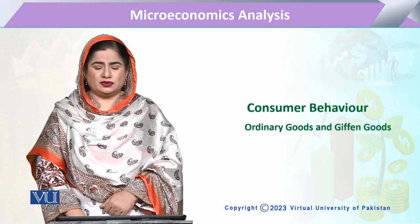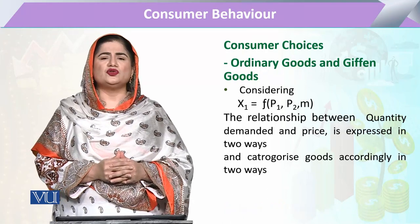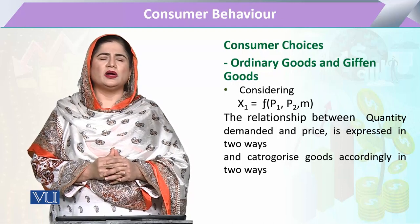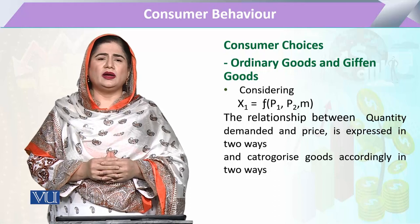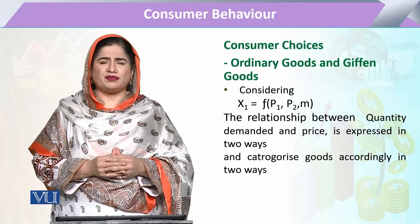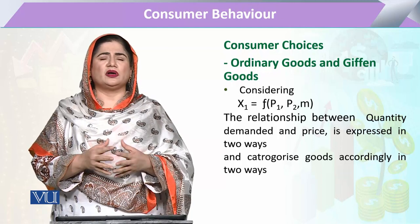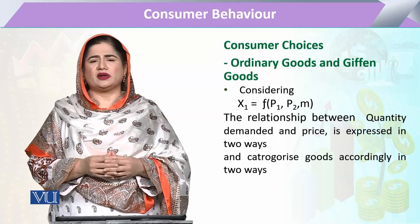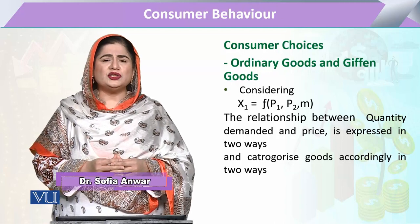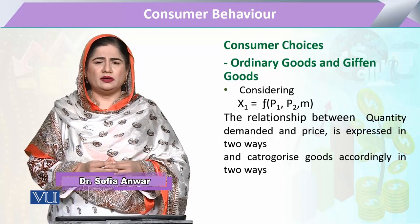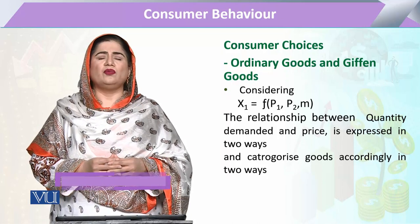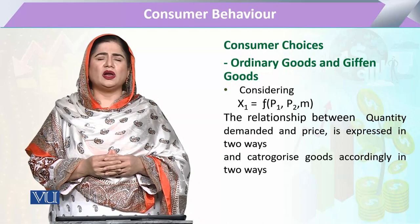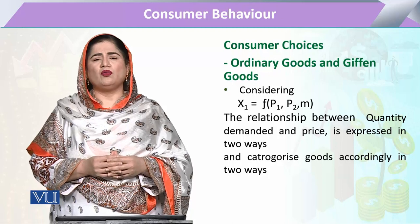Ordinary Goods and Giffen Goods. As we know, consumer demand for a commodity depends upon the price of the good, the price of the other good, other factors like preferences, and the income of the consumer. The relationship between the quantity demanded of a commodity and its price is expressed in the law of demand, and as per the law of demand, this relationship will be negative.